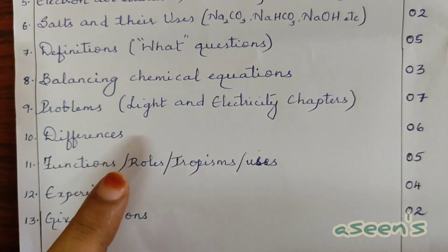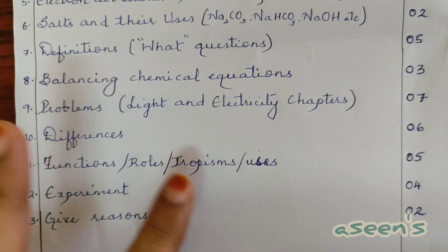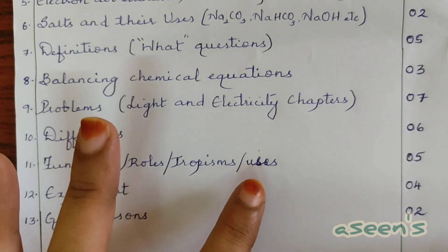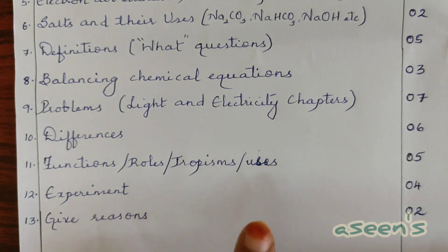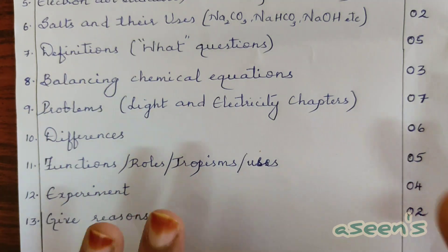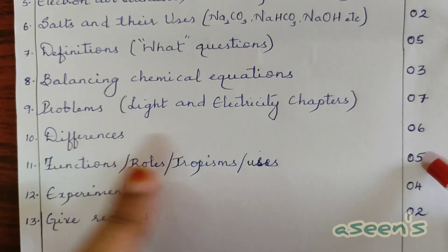Next, functions, role, tropisms - this is specifically for the biology part - and uses of concave, convex, uses of commutator. All together under this portion you're going to get at least five marks. It's going to be more than five marks to be frank, but I'll keep it down.